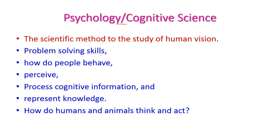The next foundational subject is psychology, or cognitive science. This is the scientific study of human vision — how humans make decisions in complicated situations, which is called problem-solving skill. How is a problem being solved by the human? How do people behave in an unexpected situation? Perceive means how do they observe the environment to solve a particular problem and process cognitive information and represent knowledge. By using psychology, we can answer: How do humans and animals think and act?